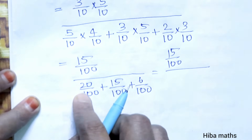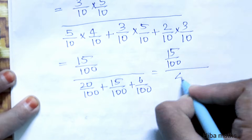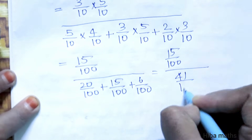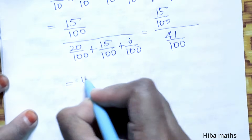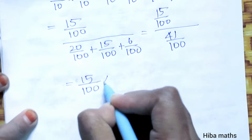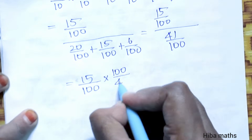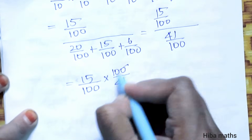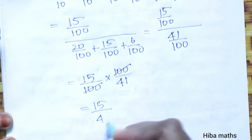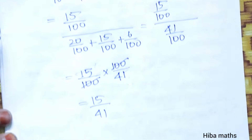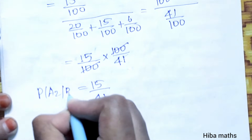So 20 + 15 + 6 = 41. Therefore P(A2|B) = (15/100) ÷ (41/100) = 15/41. The answer is 15/41. The value of P(A2|B) is 15/41.